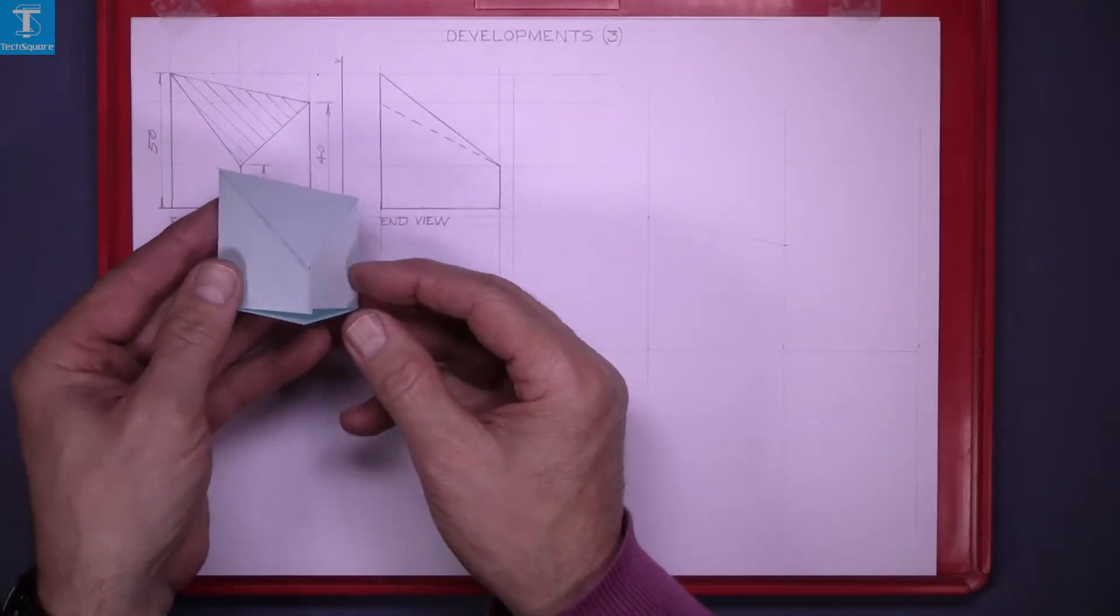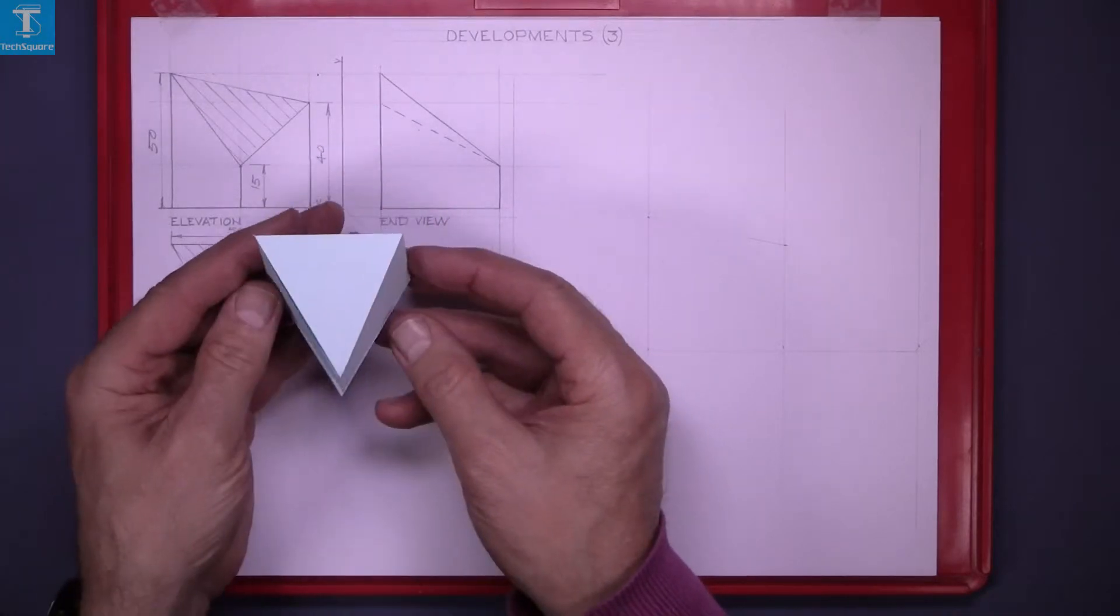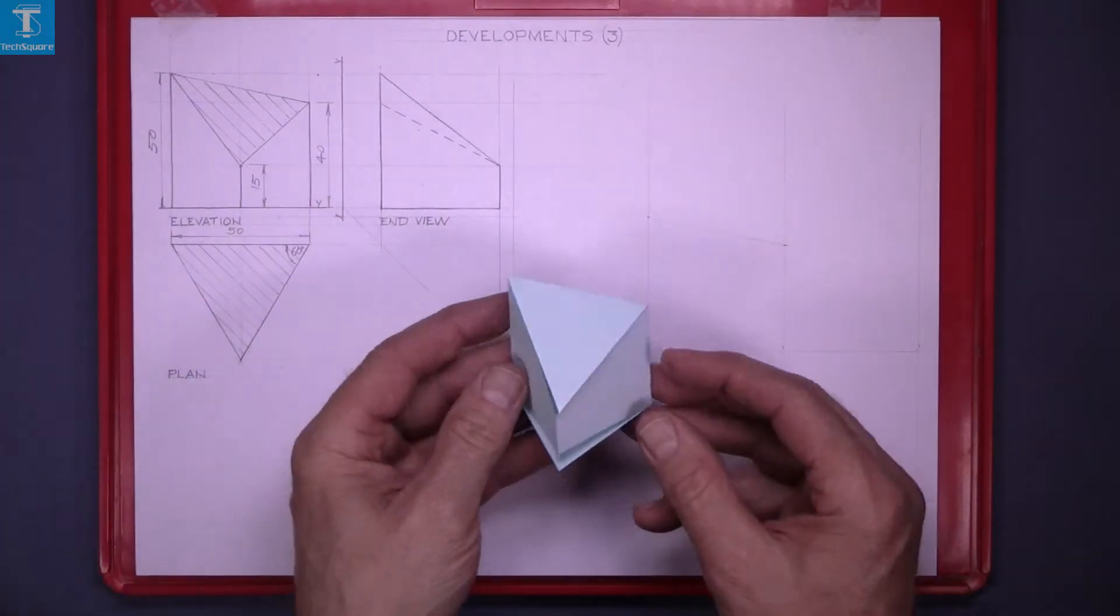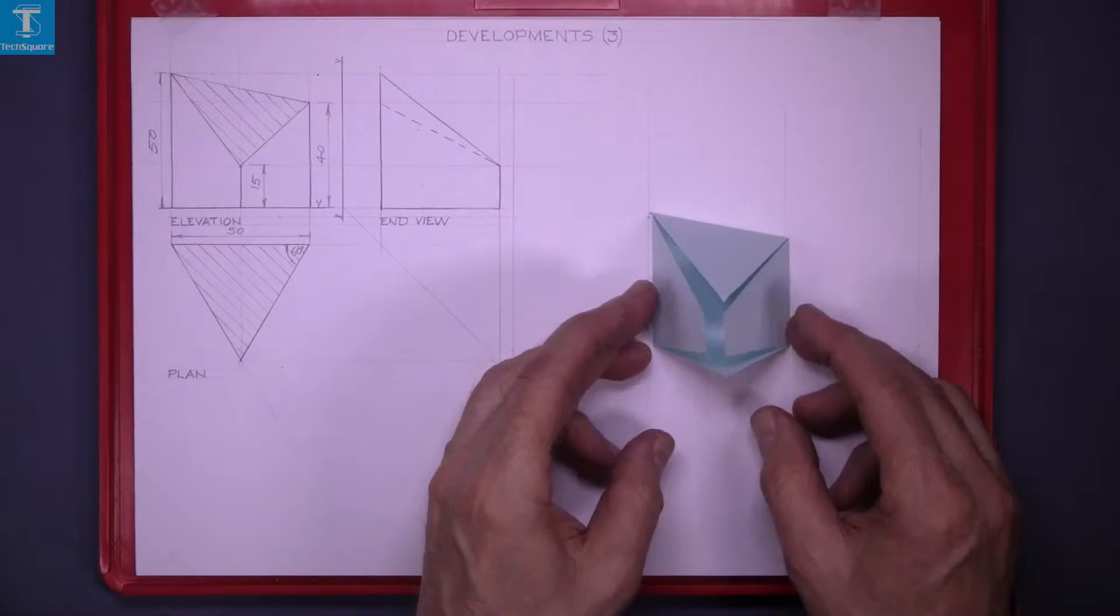That's the elevation, the end view, and the plan looking directly down on it. We are asked to draw the development.